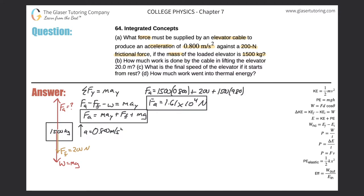Letter B: how much work is done by the cable in lifting the elevator 20 meters? We're dealing with work now. We know the force applied by the cable, so we need a formula relating force, distance, and work — which is W = F·d·cosθ, shown over here on the right-hand side. Let's do letter B right over here.